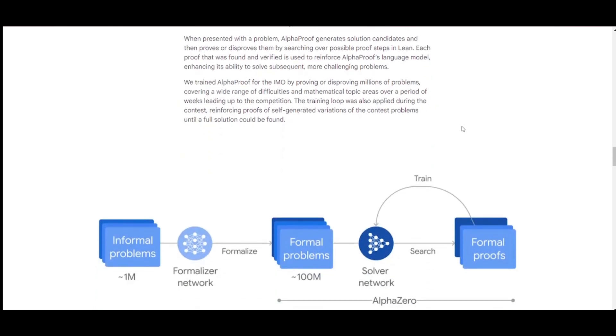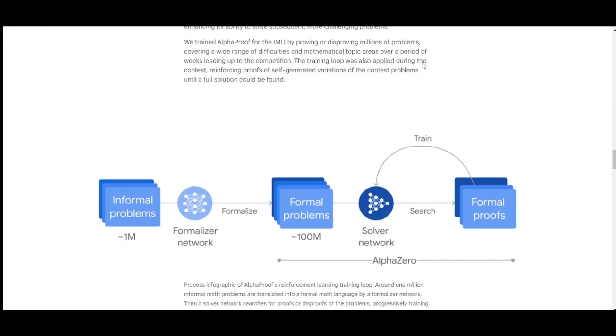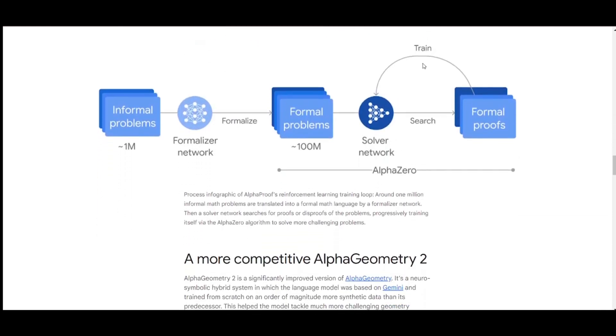AlphaProof was trained for the IMO by proving or disproving millions of problems, covering a wide range of difficulties in mathematical topic areas over a period of weeks leading up to the competition. The training loop was also applied during the contest, reinforcing proofs of self-generated variations of the contest problems until a full solution could be found.